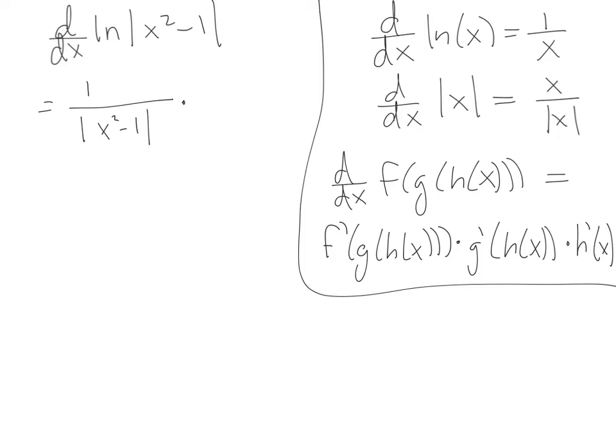And then I have to move in a layer. So my next function that I'm working with is the absolute value, and the rule for the absolute value function is I take the stuff inside over the absolute value of the stuff inside. So the stuff inside is x squared minus 1 over the absolute value of x squared minus 1.